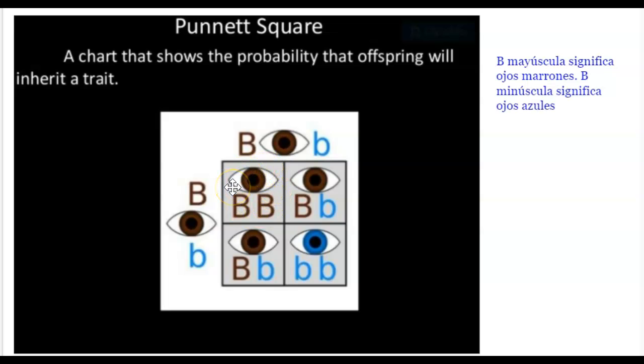One child, 25%, has the chance of having brown eyes with homozygous traits. 50%, or two of them, these two squares, are heterozygous with the dominant trait showing. And 25% will have blue eyes.